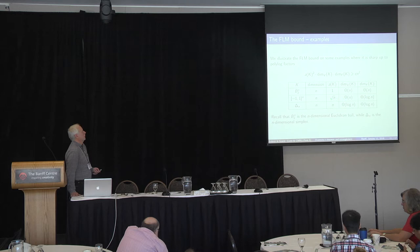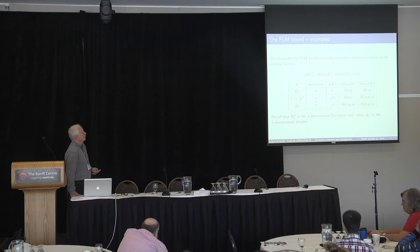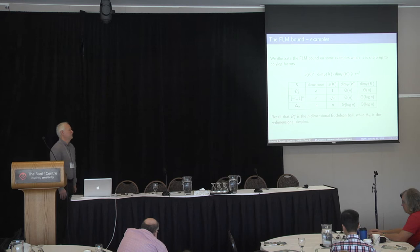If you look at the cube, then asphericity is square root of N, which is the worst case scenario for centrally symmetric sets. The facial dimension is of order log N because we have 2N faces.